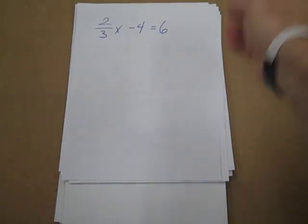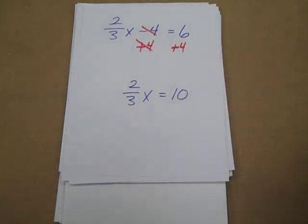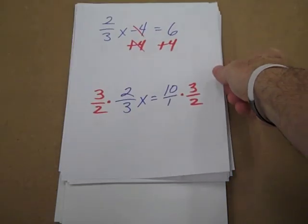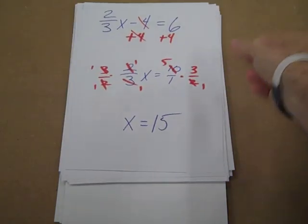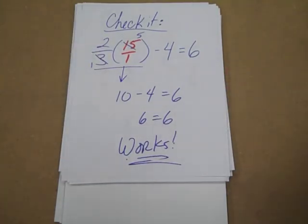One with a fraction. Again, we're going to get rid of what's attached addition or subtraction wise — we're going to do that to both sides. Simplify the right side, bring down what's left on the left-hand side. Now we've got a fraction attached to a letter, so we're going to multiply by the reciprocal — again to both sides. Reduce the left side, reduce the right side. It checks out. Put it back in — if they equal, you've done your job. Everything's right.